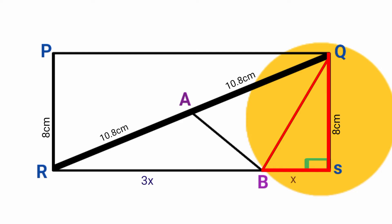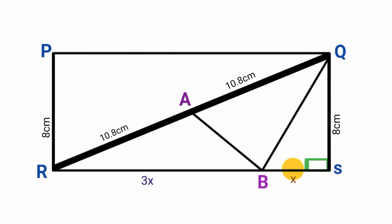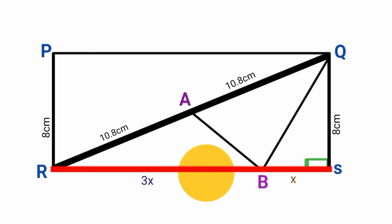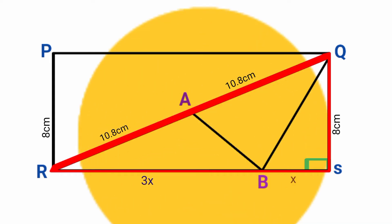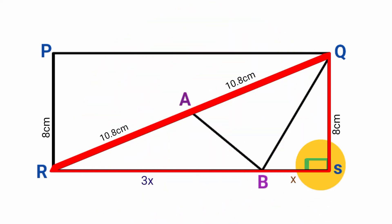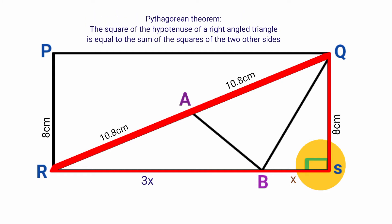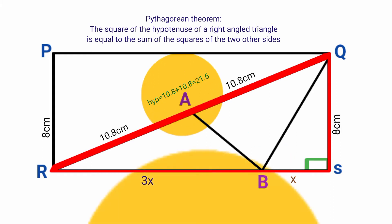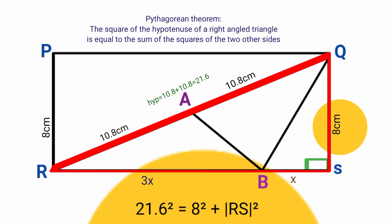Since this is a right angle triangle, we can use the Pythagorean theorem to find the length of line BQ if we have the length of line BS. To find BS, we first need line RS. Triangle QRS is also a right angle triangle on its own. The Pythagorean theorem states that the square of the hypotenuse equals the sum of the squares of the two other sides. Line QR is the hypotenuse, so 21.6 squared equals 8 squared plus RS squared.